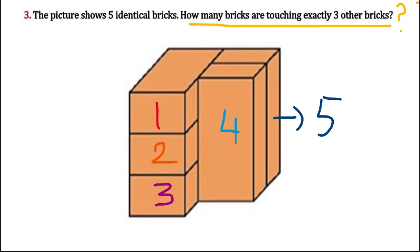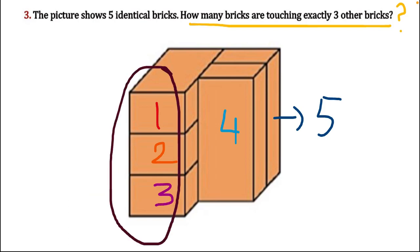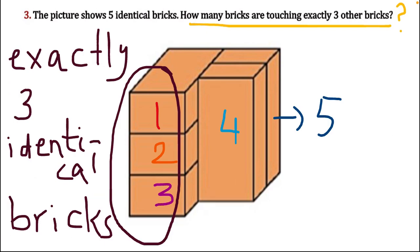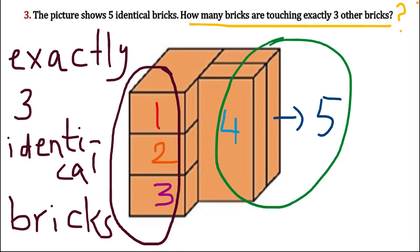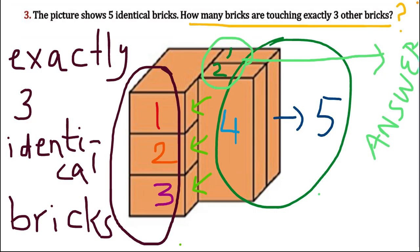We need to count the total number of bricks touching exactly three other bricks — the ones where I have written numbers one, two, and three. These are the bricks stacked up on the left side. Bricks four and five are placed vertically next to each other and are touching exactly three bricks. I have written numbers in green on the top view of the right side bricks. I put arrows so you can easily see that brick numbers four and five are each touching three bricks. The total count is two, and that is your answer.